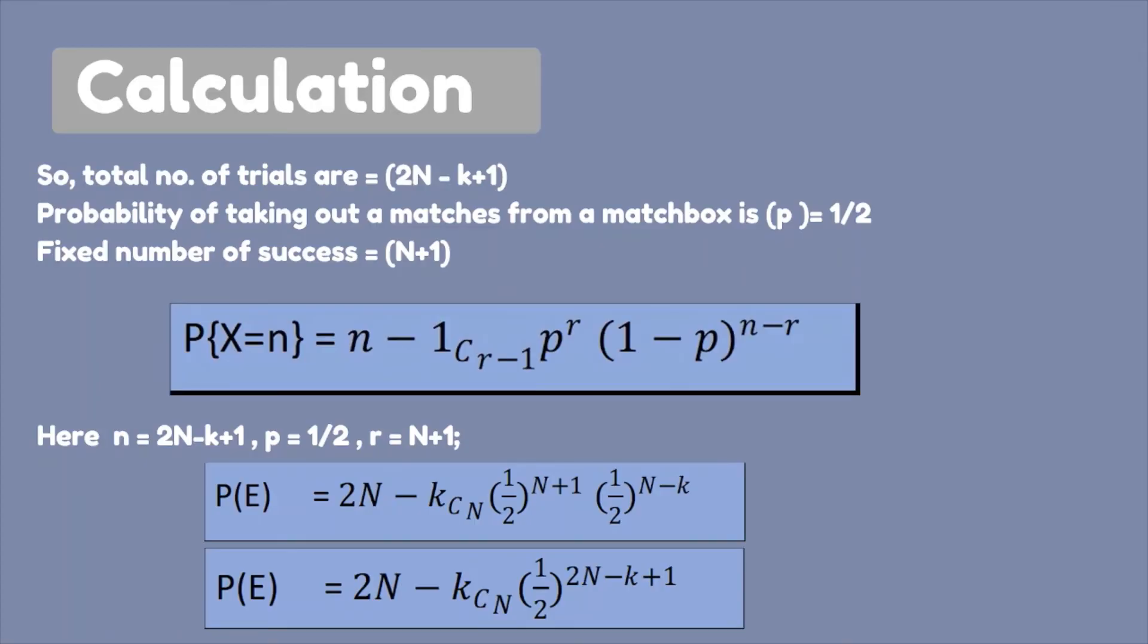So now in calculation part, we know that we have N plus 1 trials for right hand matchbox to be empty and N minus k trials for left hand matchbox to remain exactly k matches. So the total number of trials we have are 2N minus k plus 1 and we know that the probability of taking out a match from a matchbox is half that is our success probability and we have to make exactly fix number of N plus 1 success.